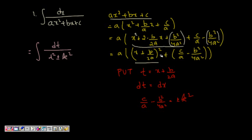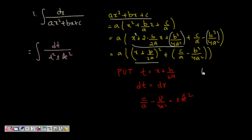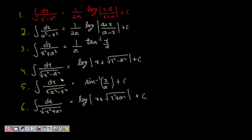We see we are getting something of the form t² plus some constant. We substitute t equal to x plus b/2a, so dt equals dx, and we set k² equal to c/a minus b²/4a². The integral then becomes of the form dt by t² plus or minus k², depending on the sign — bringing it into one of the standard forms: x² minus a², a² minus x², or x² plus a².